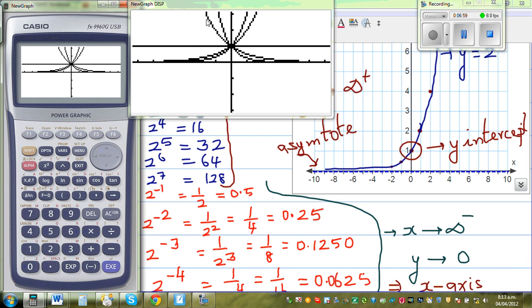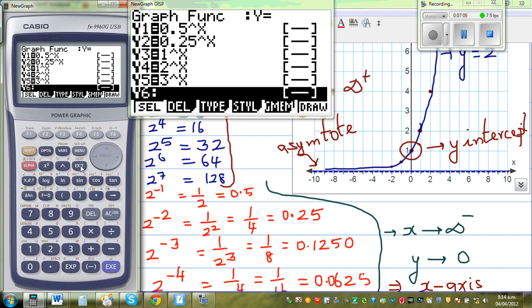So these two graphs are decay curve. This is 1 to the power x, and these two are growth curve. So in other words, when the number is between 0 and 1, it will become a decay curve. When it is 1, it becomes a line, and when it's a number greater than 1, it will become a growth curve.